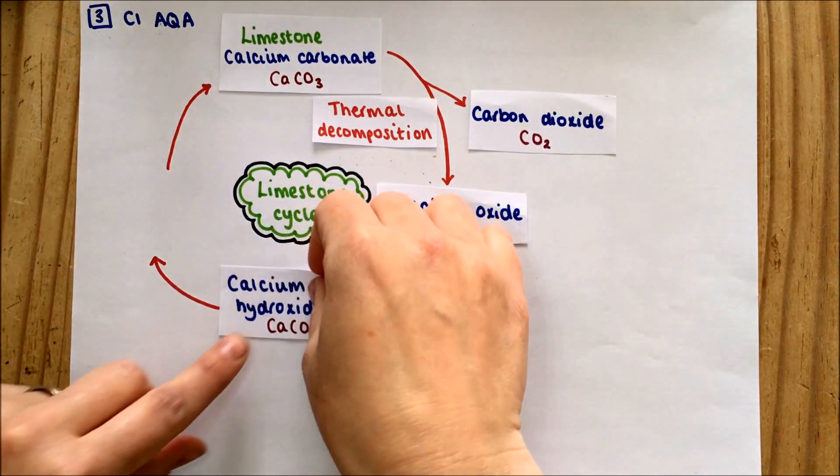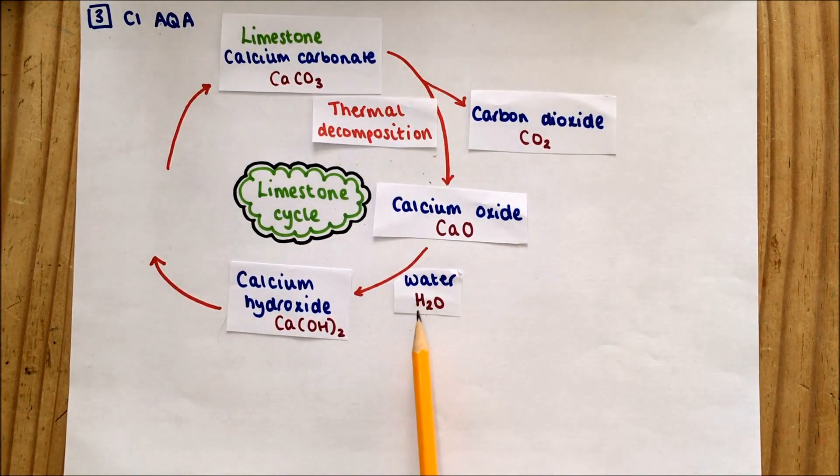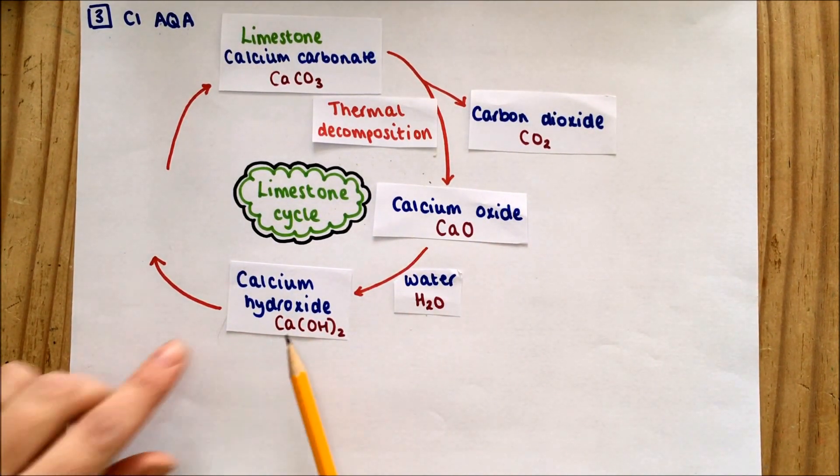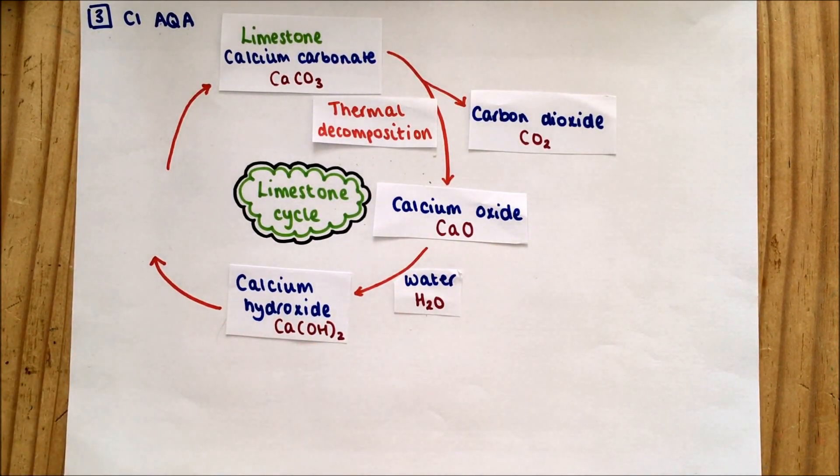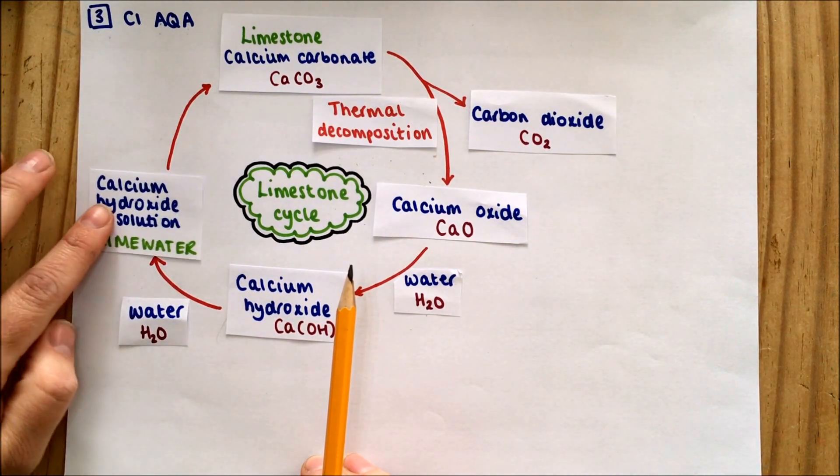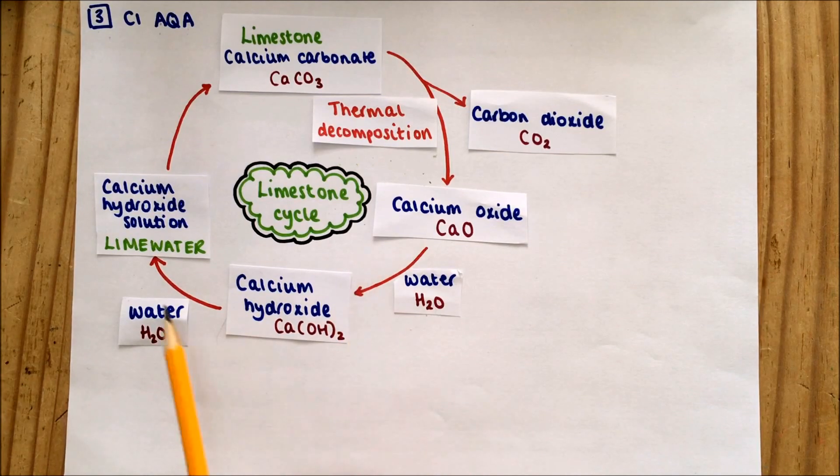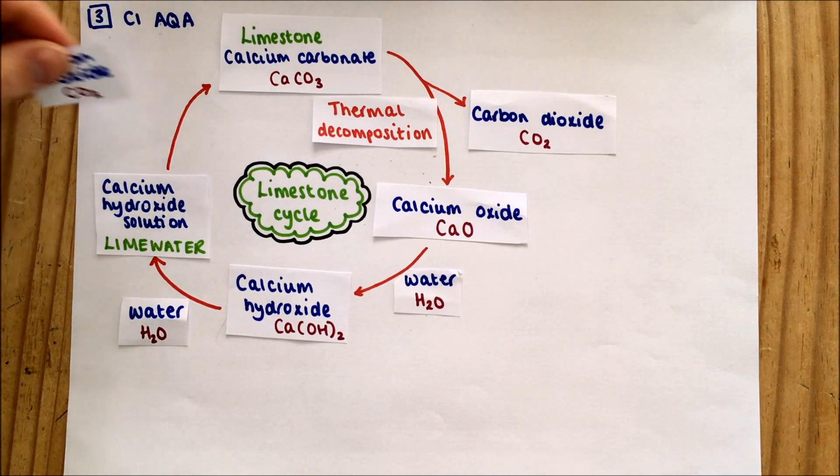We're adding in the hydrogen, so oxide to hydroxide. If we add slightly more water again, we get calcium hydroxide solution, and that's more commonly known as lime water. You'll use that in school to test for the presence of carbon dioxide.